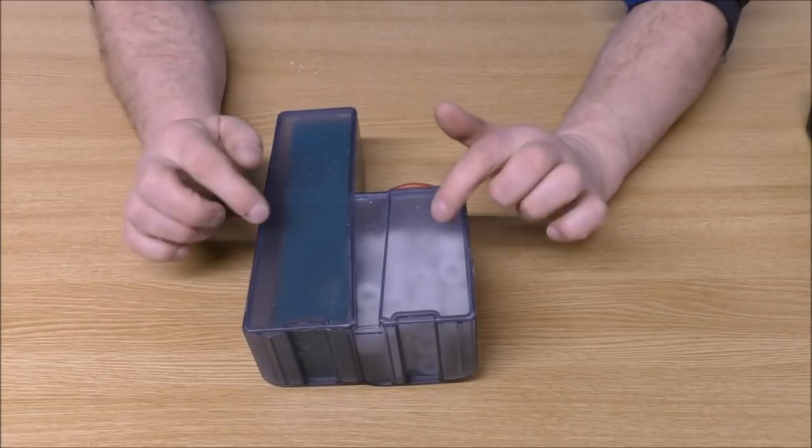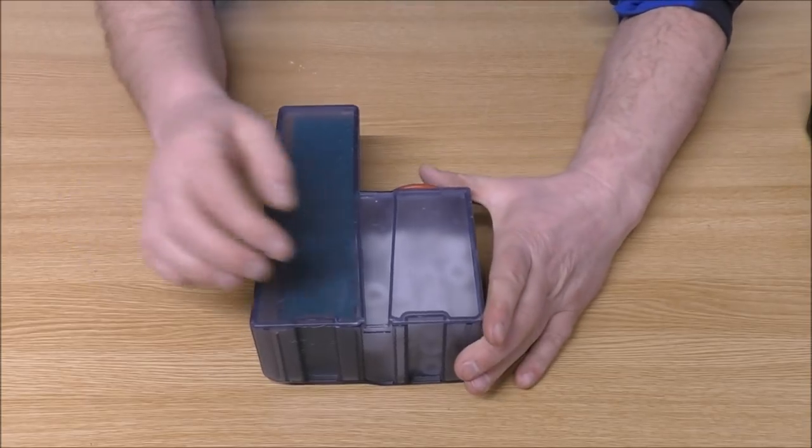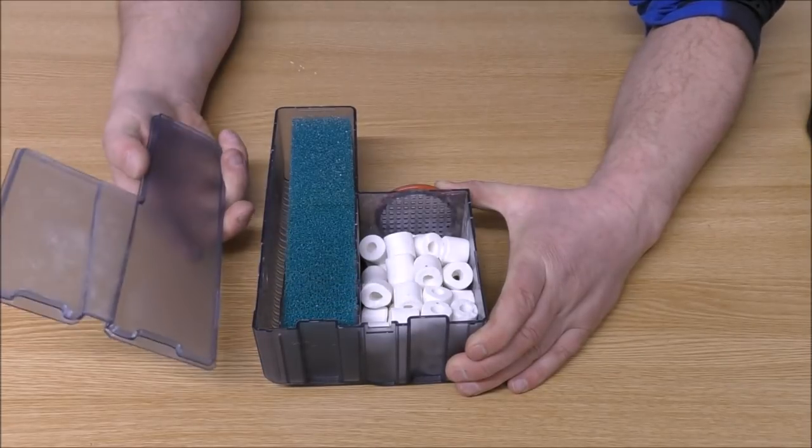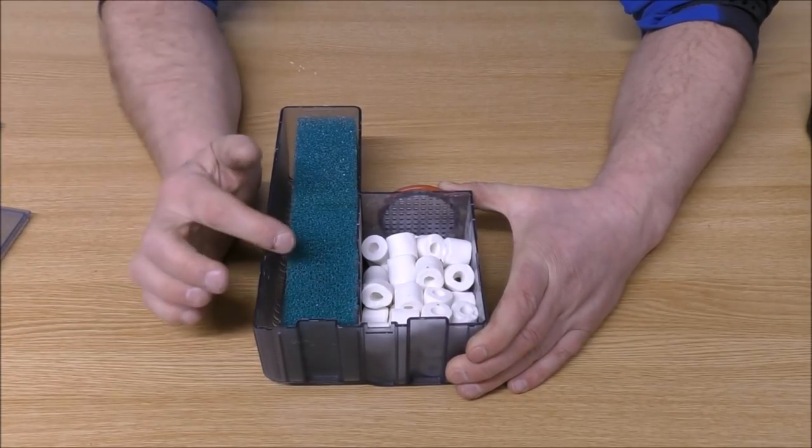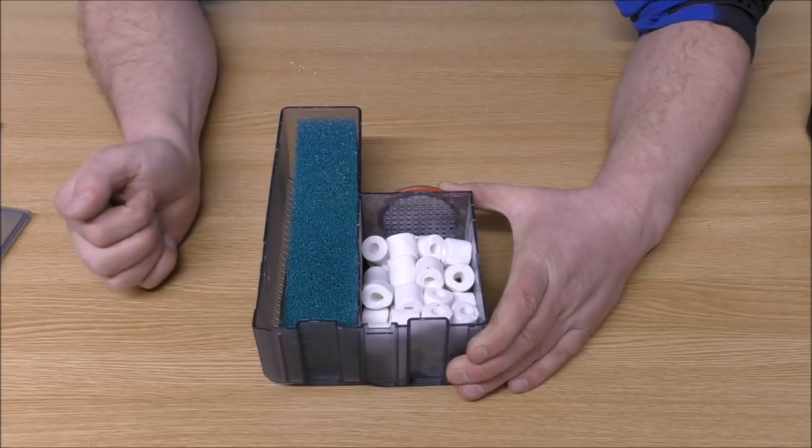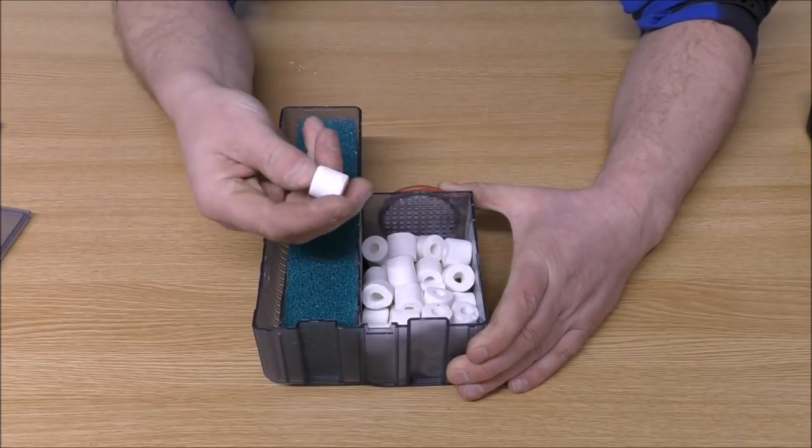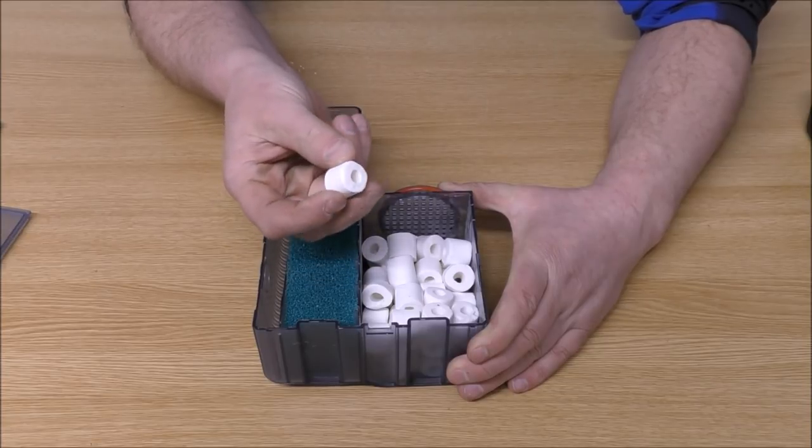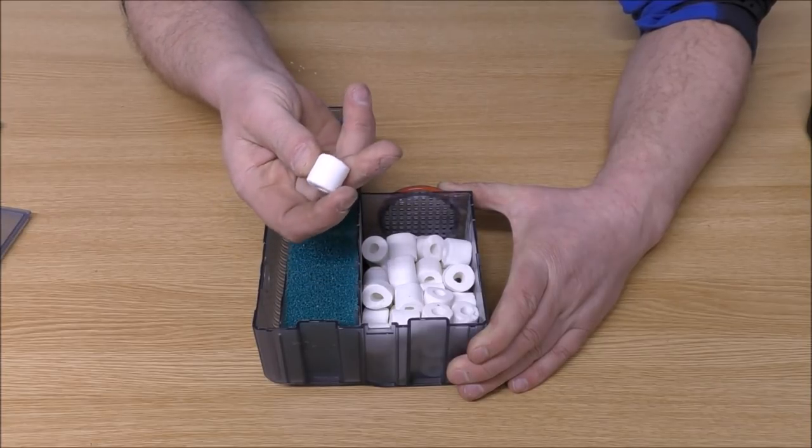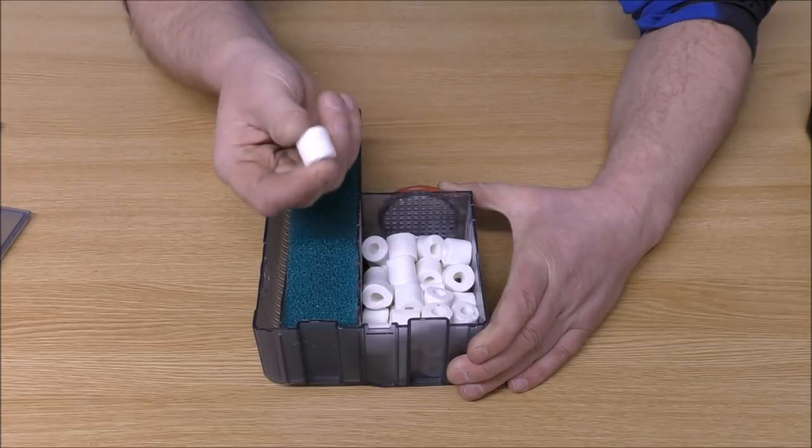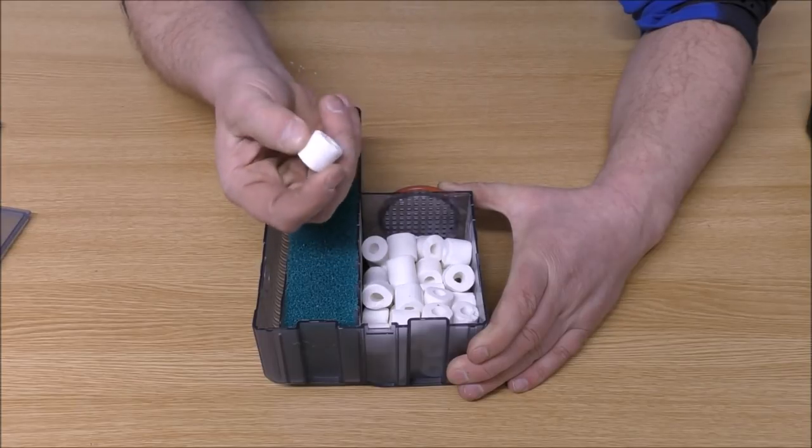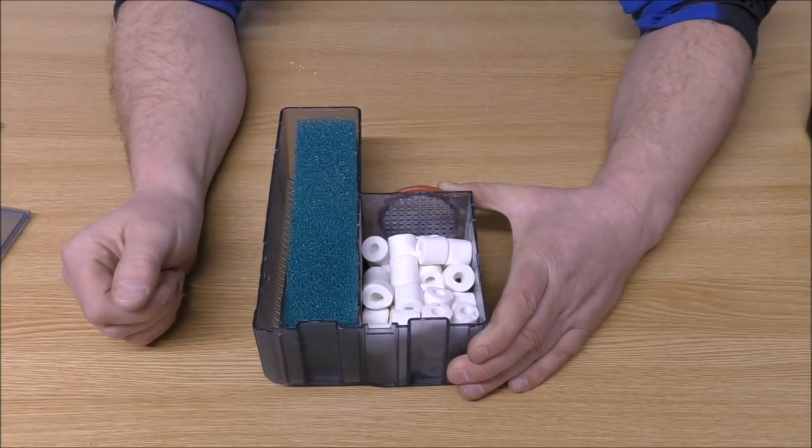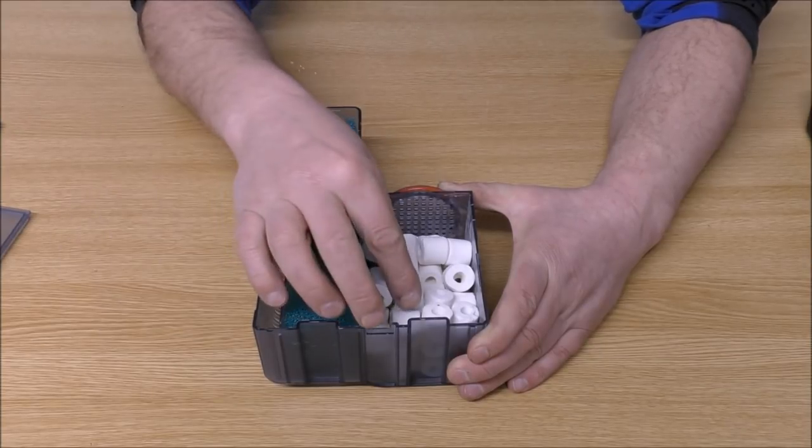The part we're really interested in is this. This is where the magic happens. Or where it should happen. The back just comes off like that. And in here you've got two pieces of coarse foam and something called Crystal Max. Now that is a very hard extremely dense media made into a ring shape. And to be honest it's a bit of a travesty. It's not very good at all.